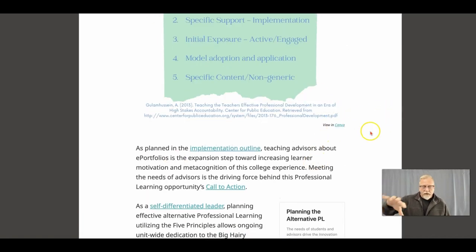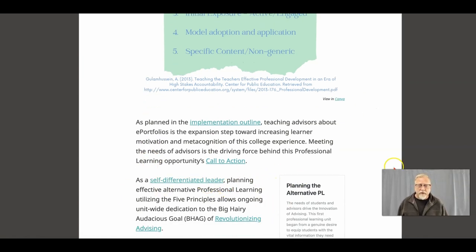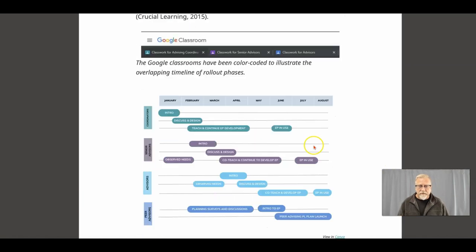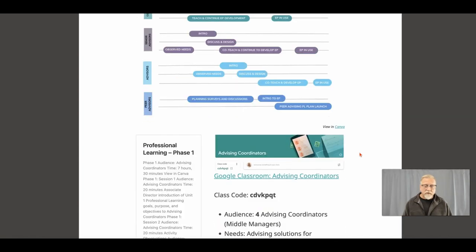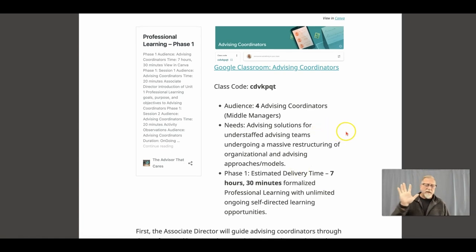This student is from the ADL stream and they are making a connection to their implementation outline, which they developed in their original innovation planning process. They talk about a variety of other things like being a self-differentiated learner, so they're making connections to all the things they have explored and researched. As they present their plan, you'll see it has different stages and different phases, with a flow chart that identifies how they're going to roll out their plan in Google Classroom.